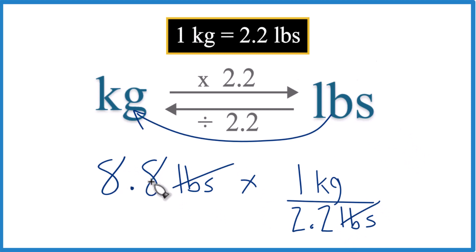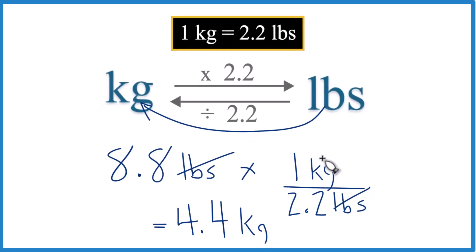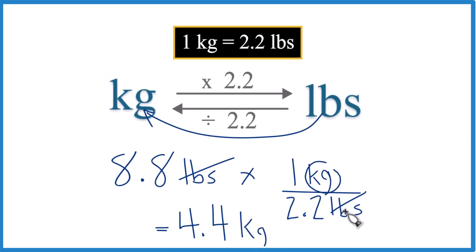And really, again, it's just 8.8 divided by 2.2, like we do up here. But now when you do it, your units cancel out nicely. And you're left with 4.4 kilograms, just like before.